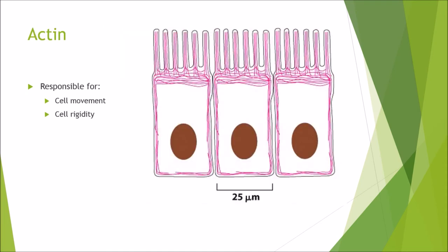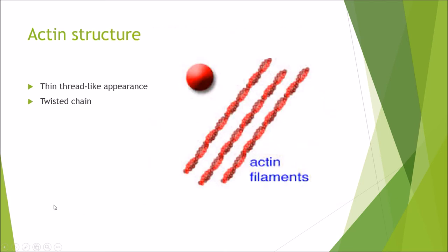The final filament is actin, which is responsible for cell movement and cell rigidity. Actin is found around the outsides of cells, giving them their shape. The actin structure has a thin thread-like appearance of twisted chains. A single actin monomer is twisted into helices, and these helices then interlink, giving you the actin filaments.